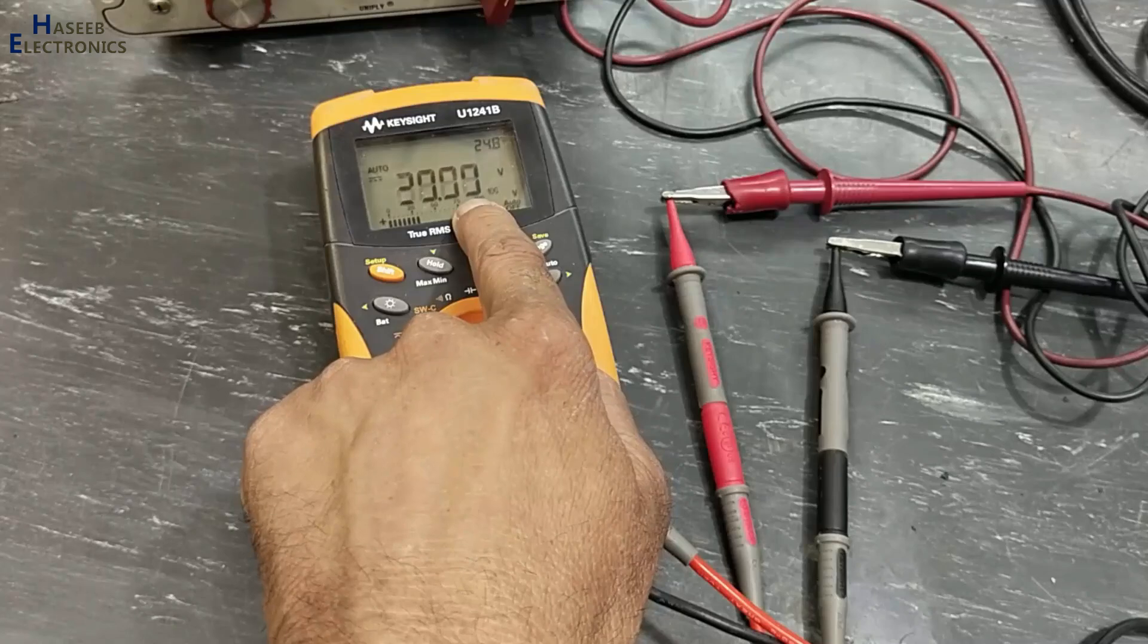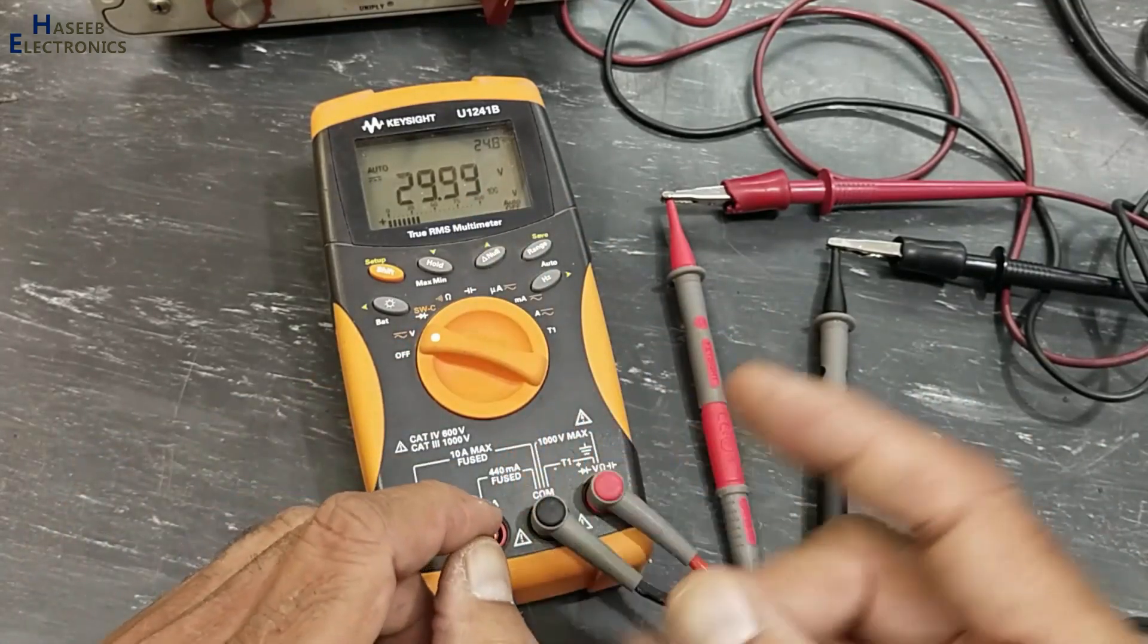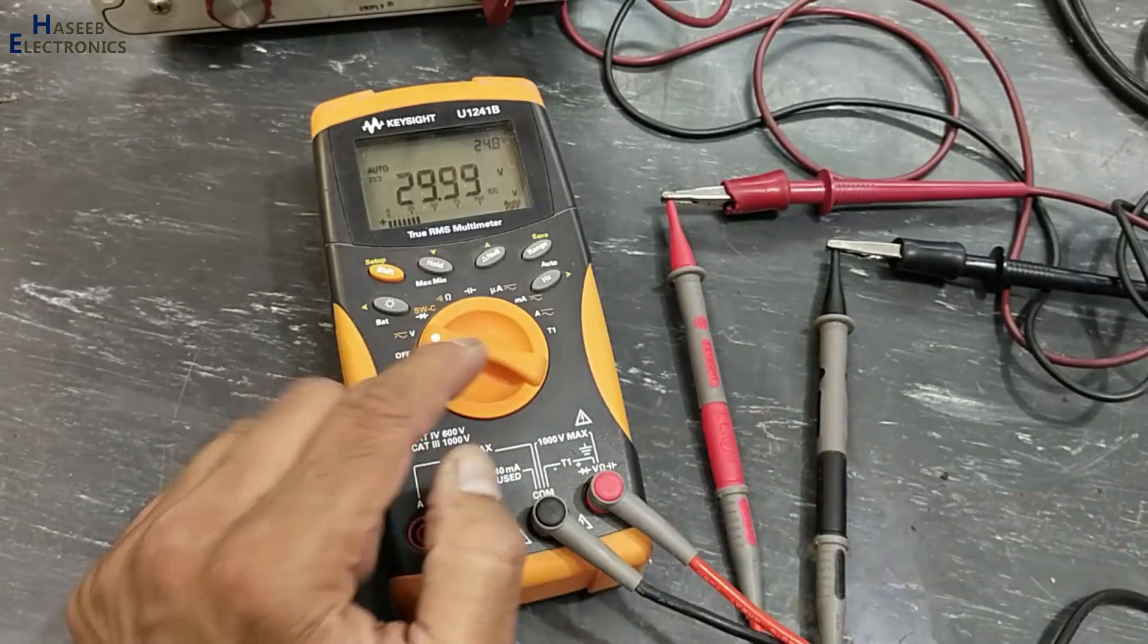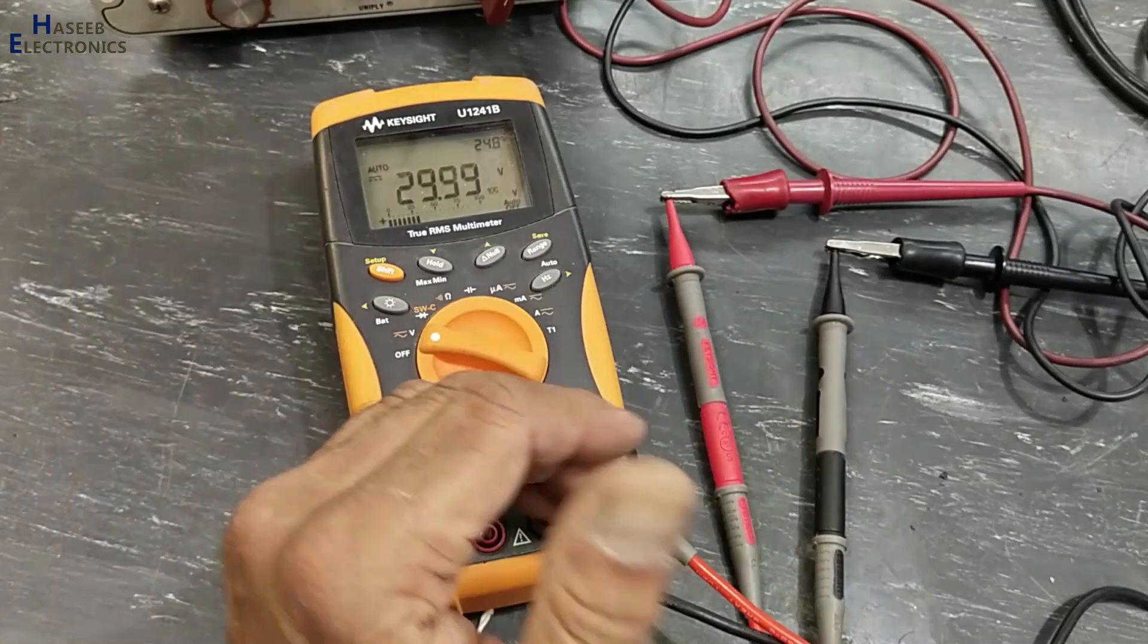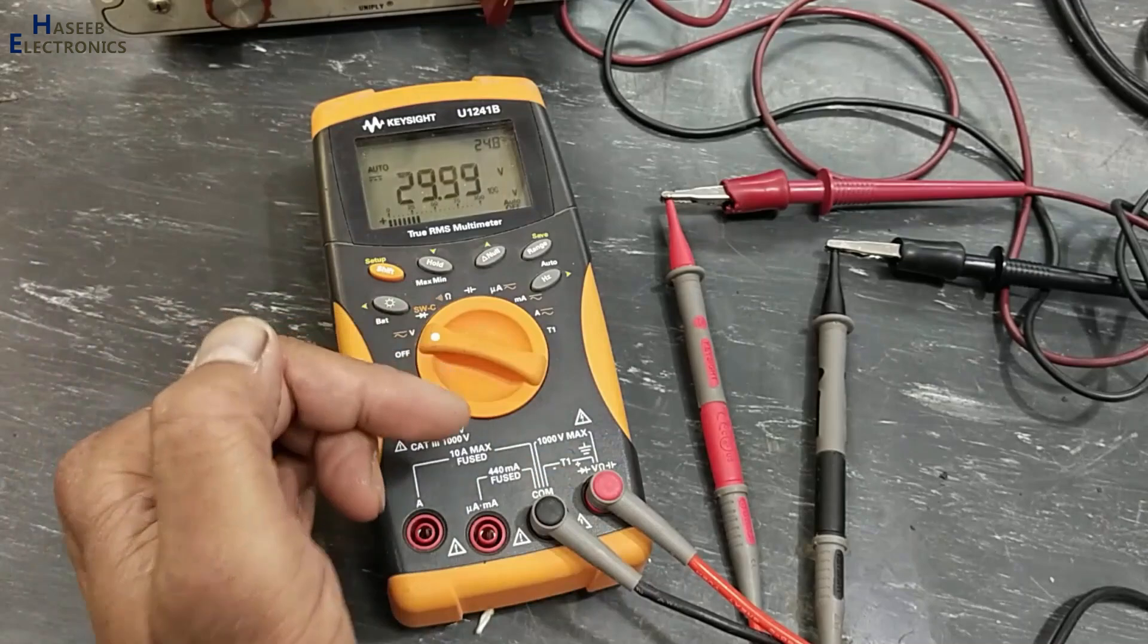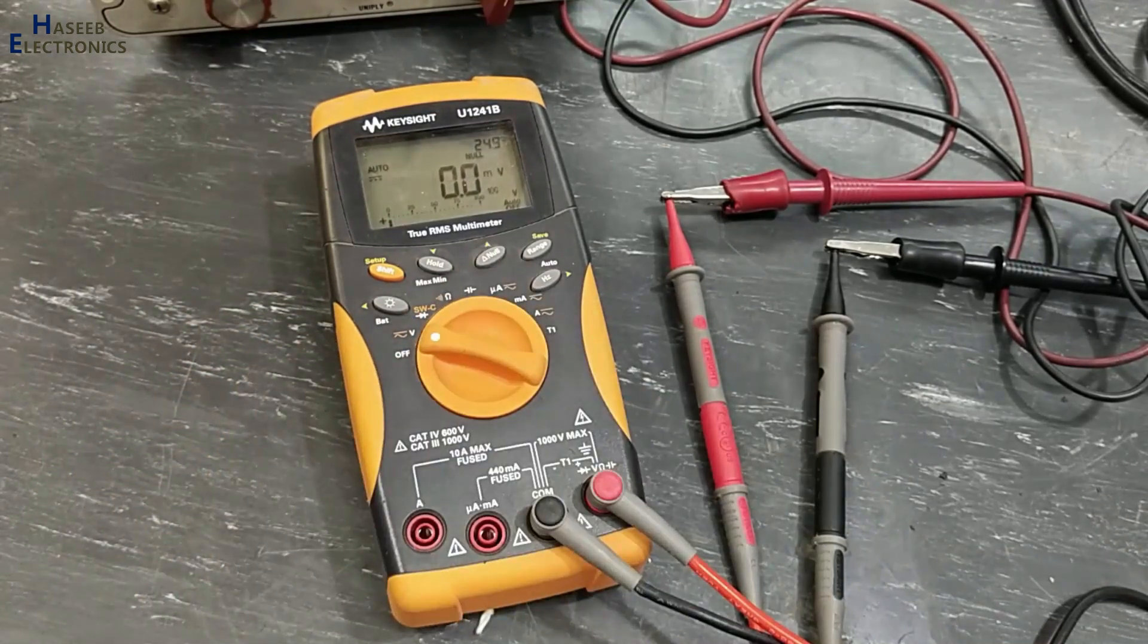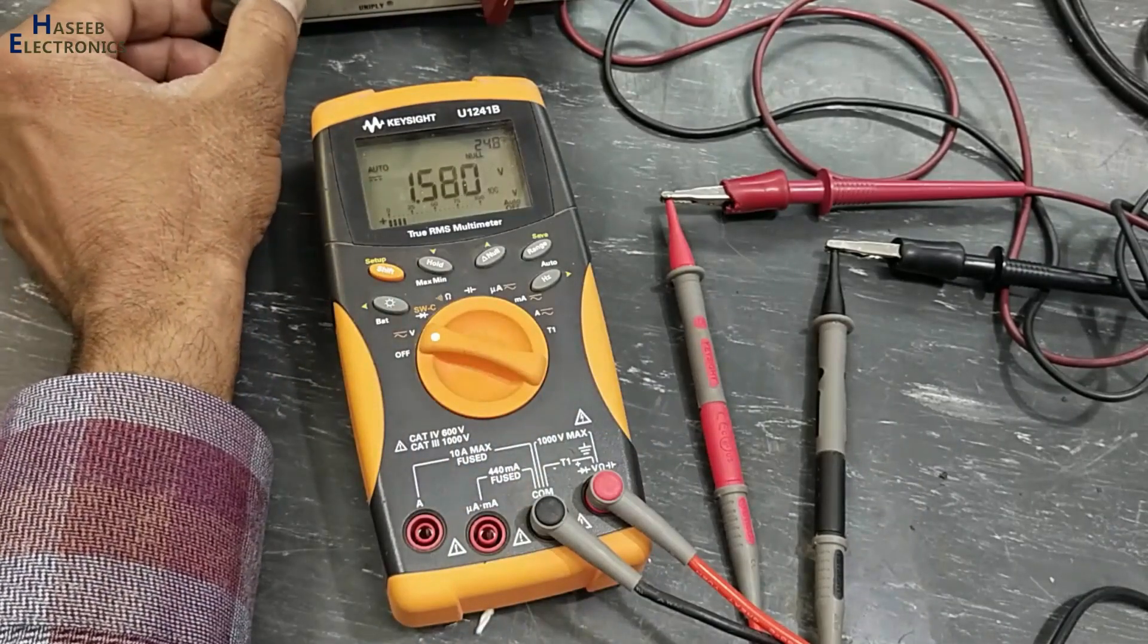We can record any change in positive side or negative side. Null function and relative function are same. We can use in resistance, in voltage, in current. Anytime we take a reference point, just press this one, it will show zero reading. Now the increase or decrease point.